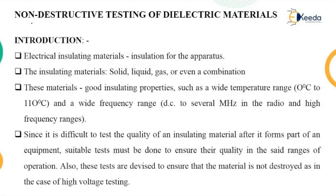Dielectric materials means the insulating material. In the case of high voltage engineering, the insulating material is classified into four categories: solid, liquid, gas, and vacuum. Solid means paper, liquid specifically means oil, gas is SF6 or even air.